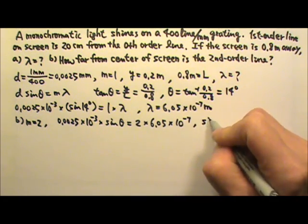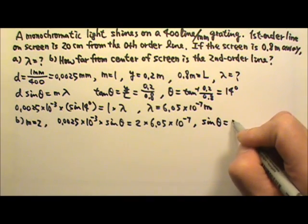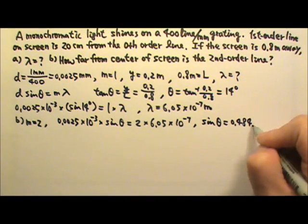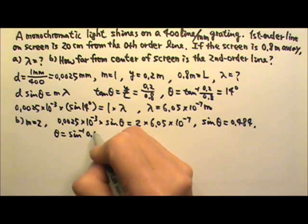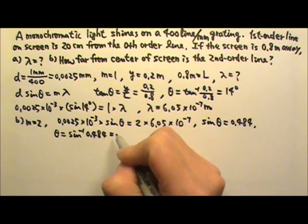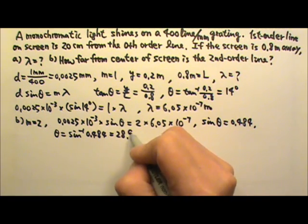So this gives us sine theta that is 0.484. That means theta is inverse sine 0.484. And that gives us 28.9 degrees.